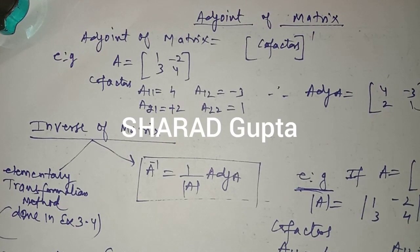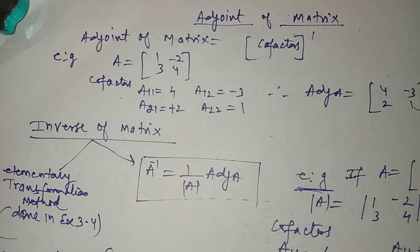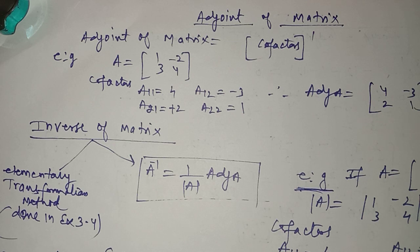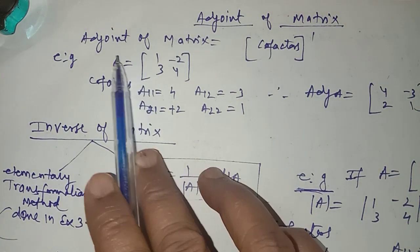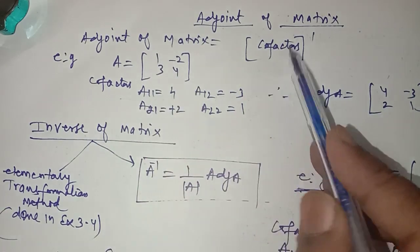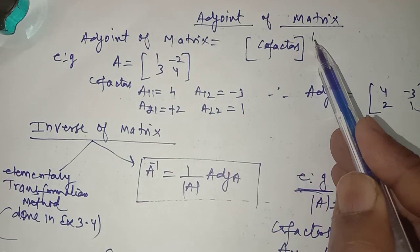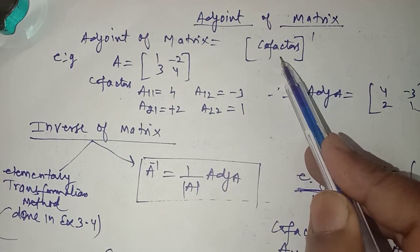Hello, this is lecture number 7 for the chapter Determinants of Class 12. In this we will discuss the very important topic: the adjoint of the matrix and the inverse of a matrix. The adjoint of the matrix is the transpose of the cofactors.